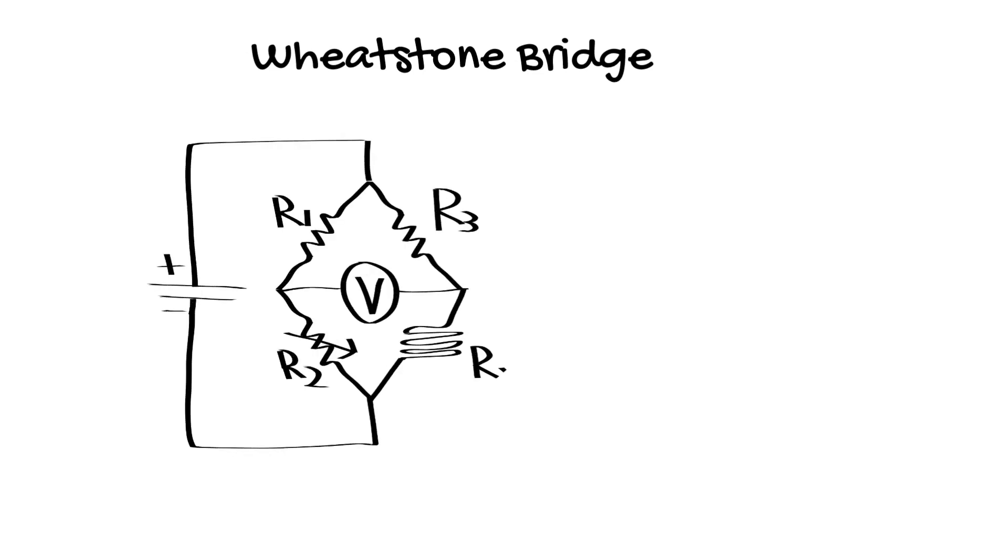Classically, the strain gauge was integrated into an electrical circuit called a Wheatstone bridge. This was used to measure what was happening to the resistance of the strain gauge over time.